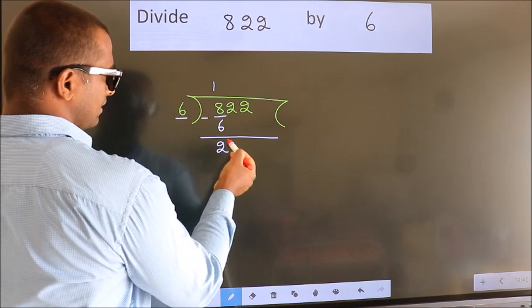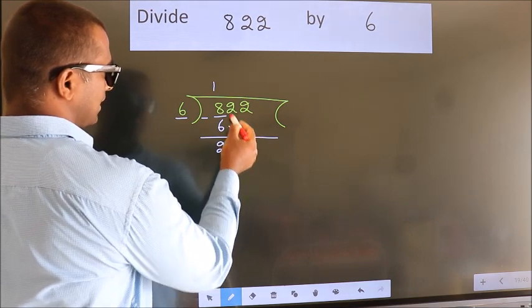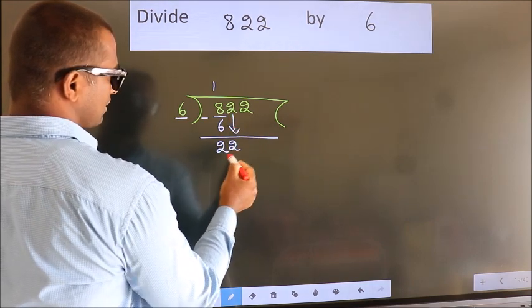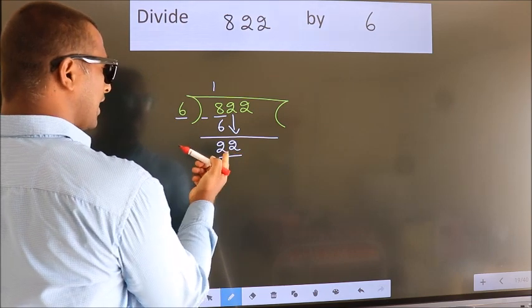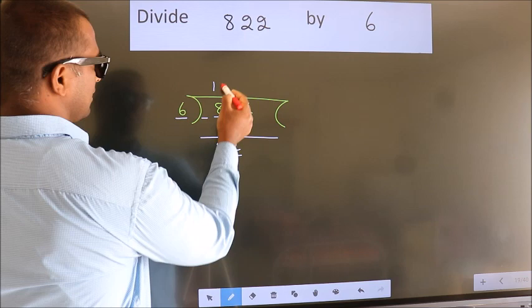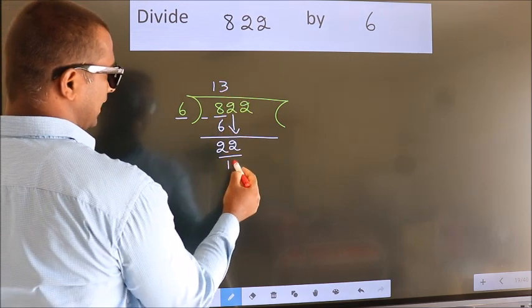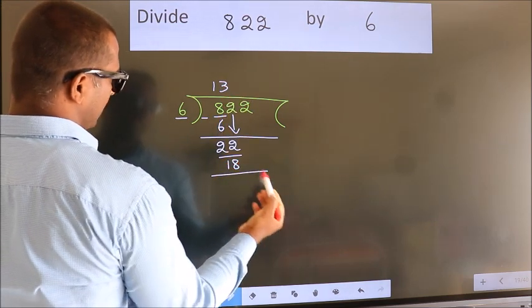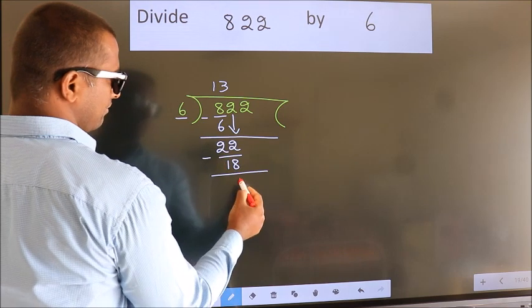After this, bring down the beside number. So, 2 down. So, 22. A number close to 22 in 6 table is 6 threes, 18. Now, we subtract. We get 4.